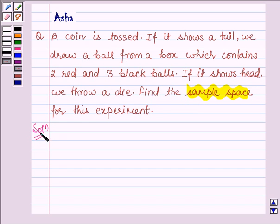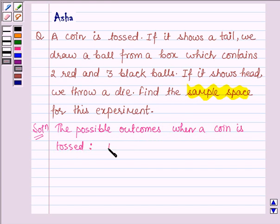So, let's start with the solution. The possible outcomes when a coin is tossed are head and tail, denoting head by H and tail by T.